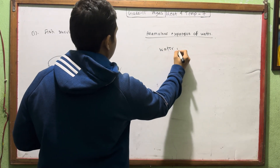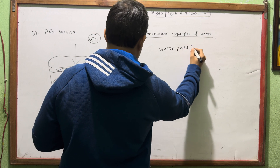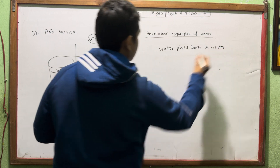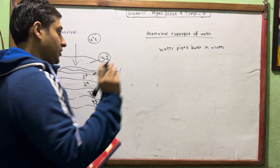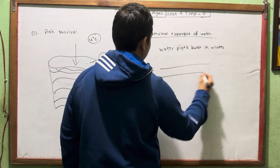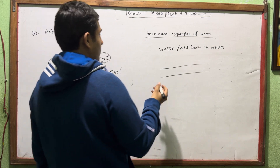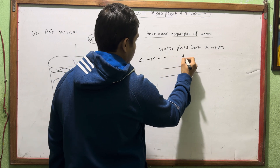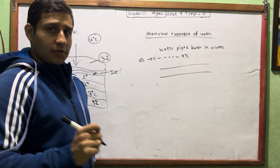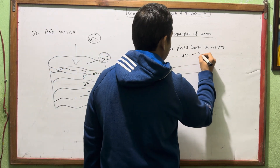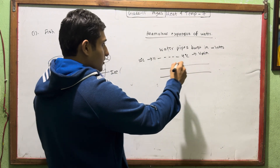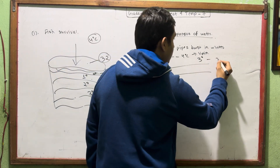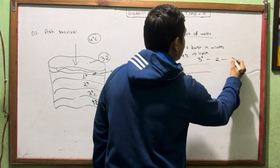The second application is water pipes bursting in winter. As water cools from 4 degrees Celsius downward, it begins to expand. At 4 degrees Celsius the volume is at its minimum, and as it continues cooling below 4 degrees — to 3, 2, 1, and finally 0 degrees Celsius — the volume increases, causing the pipe to burst.